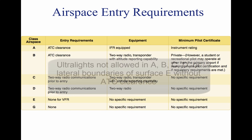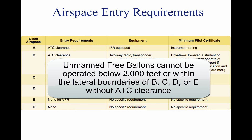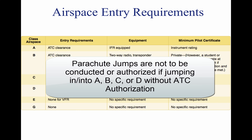In an ultralight aircraft, you may not fly into Class A, B, C, D, or within the lateral boundaries of the surface area of Class E without proper ATC clearance. Unmanned free balloons cannot be operated below 2,000 feet above the surface within the lateral boundaries of Class B, C, D, or E airspace designated for an airport unless cleared by ATC. Parachute jumps are not to be conducted or authorized by the pilot in command if jumping in or into Class A, B, C, or D airspace without proper ATC authorization.